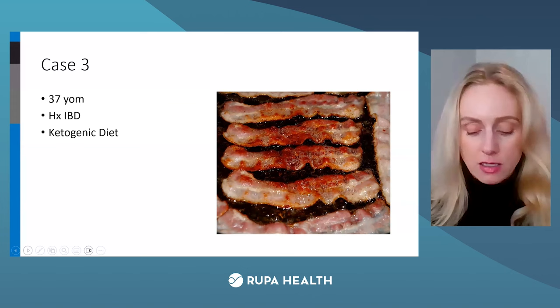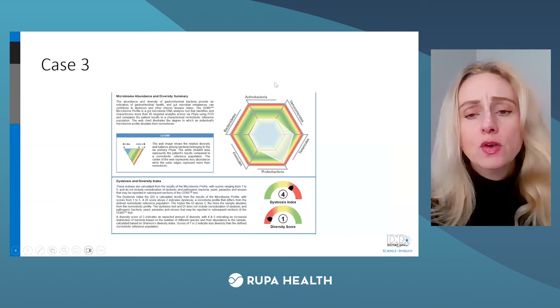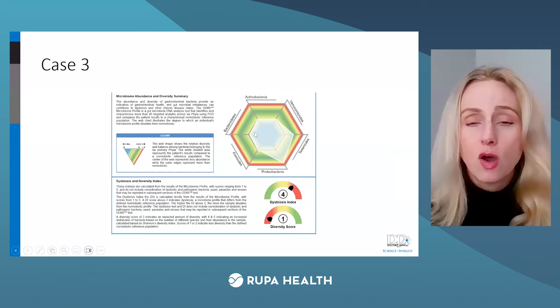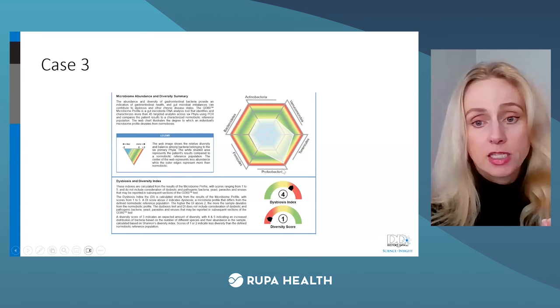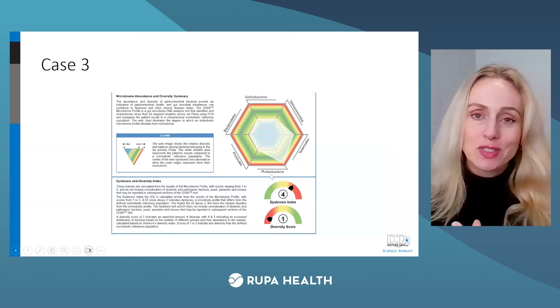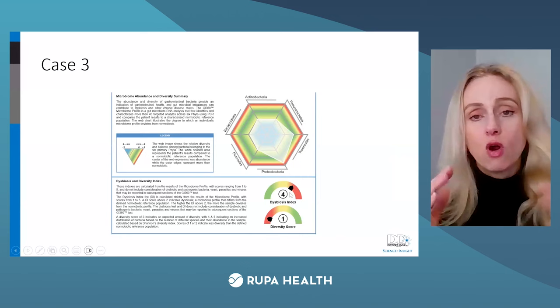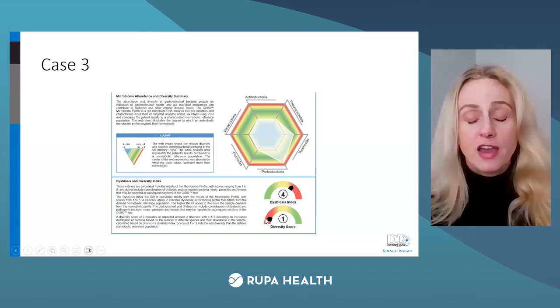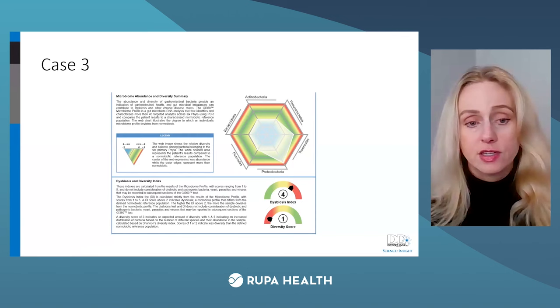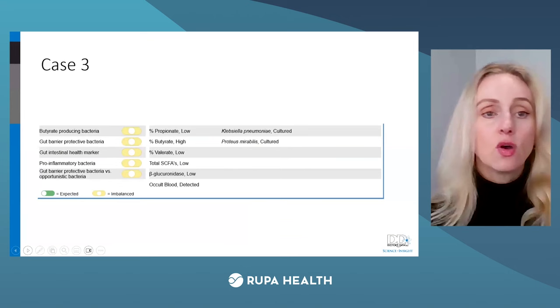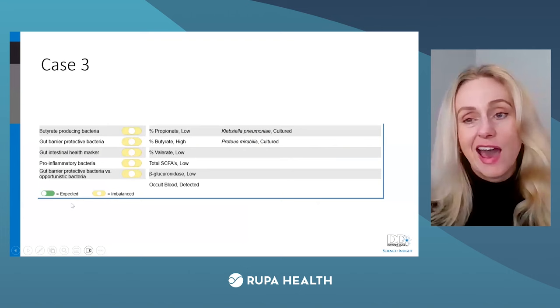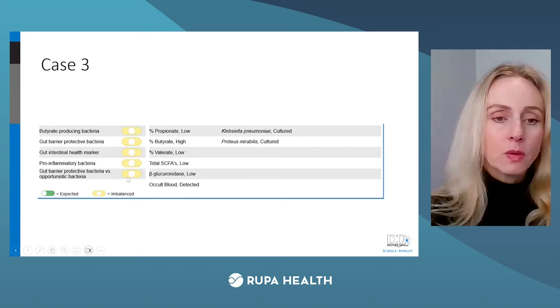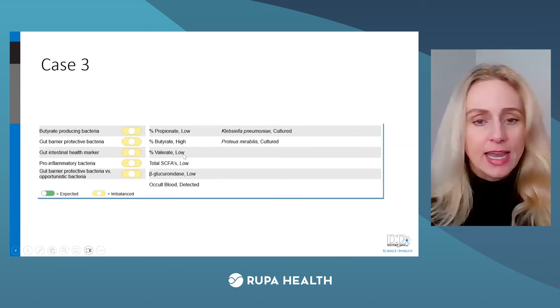Our third case is a 37-year-old male with a history of IBD who is utilizing the ketogenic diet as a therapy. For the web, we see decreased abundance — pulled in. The first thing I see is elevated Proteobacteria, an inflammatory group of bacteria that likes excess fats and excess proteins, which are part of the ketogenic diet. There is a dysbiosis index score of 4 — a dysbiotic gut with low diversity. When we look at the functional guilds, every single category of functional bacteria is outside the reference interval.